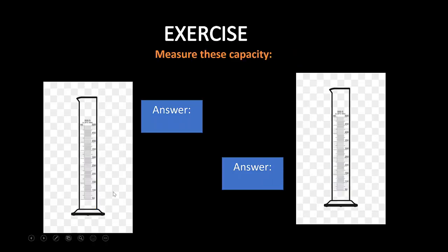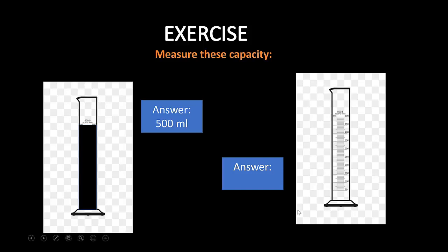Now let's see our exercises. How much Coke will there be in this volumetric cylinder? It's up to 500, so our answer is 500 milliliters. And our next answer is 300 milliliters. In this video we learned how to measure capacity, what the units of capacity are, and how to convert capacity.